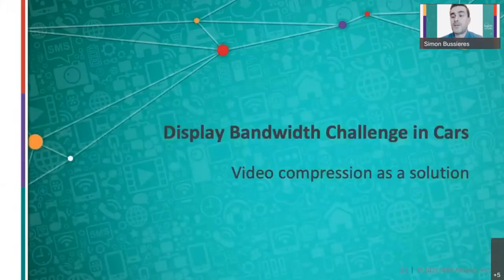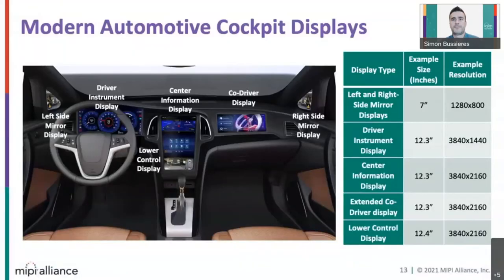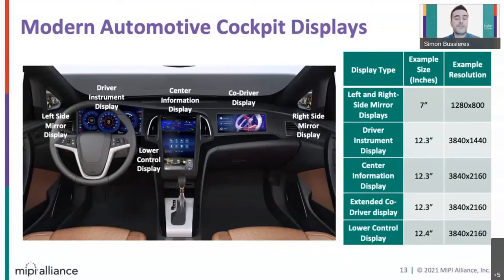Let's come back to the automotive application and see how we can leverage DSI-2 and video compression to solve the display bandwidth challenge. Today, there are more and more displays inside cars. These displays are becoming larger, so the display resolution also increases to maintain a good pixel density. The total visual display bandwidth inside cars has increased and will keep increasing in coming years. Implementing video connectivity in cars becomes challenging because all these displays and their connections need to meet strict ASIL requirements and be low power, which is even more important for electrical vehicles.